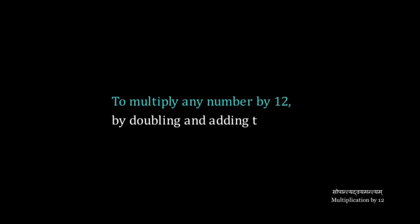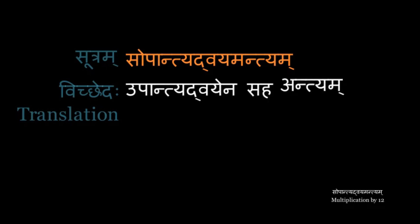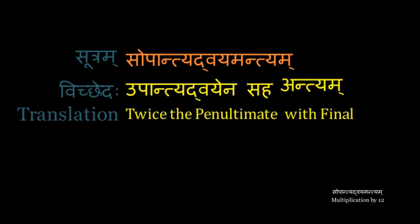In this video, we are going to learn a new method to multiply any number by 12 by doubling and adding the digits. The sutra that we use here is Sopantya Dvoyamantyam, and the meaning of the sutra is 'Twice the penultimate with final.' We will see the working of the sutra in examples.